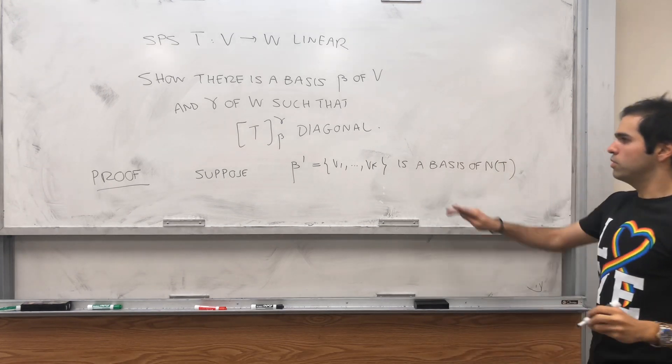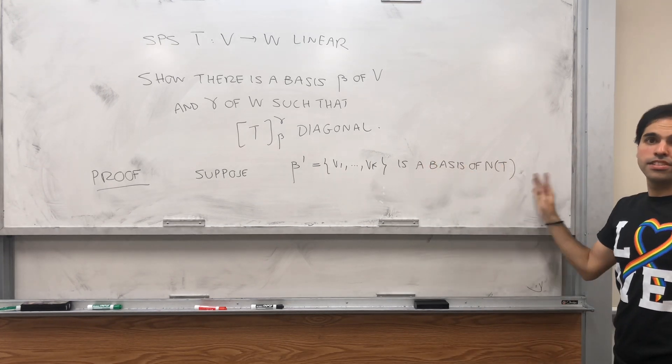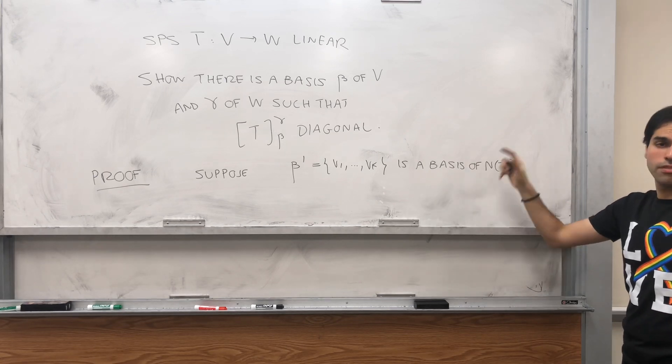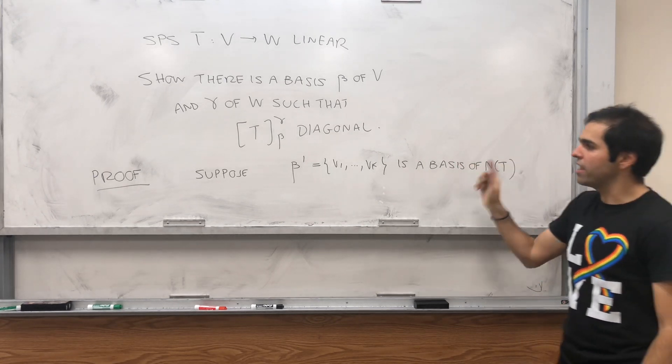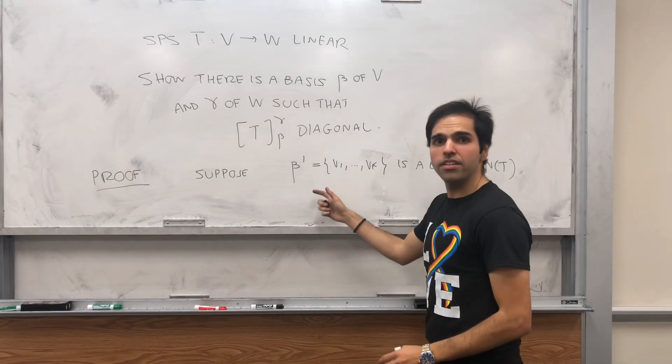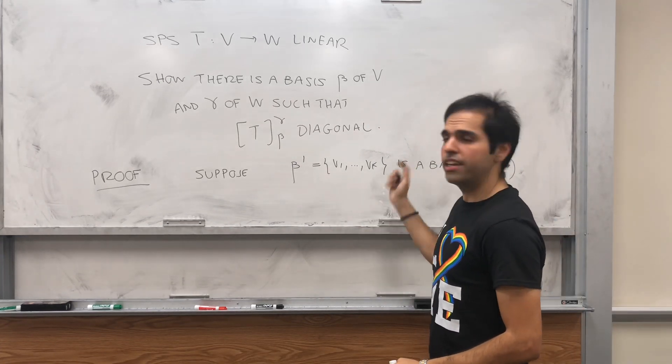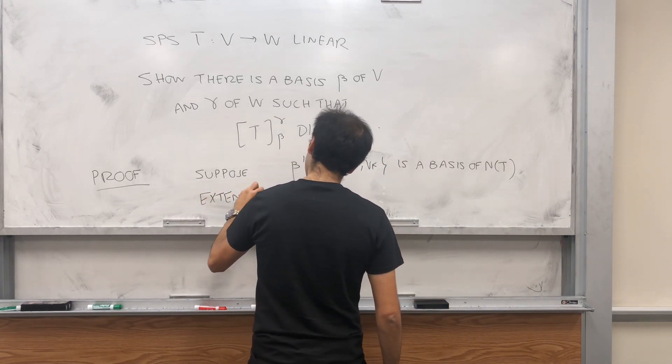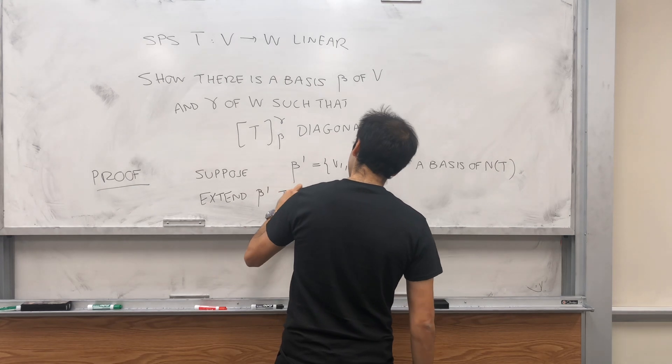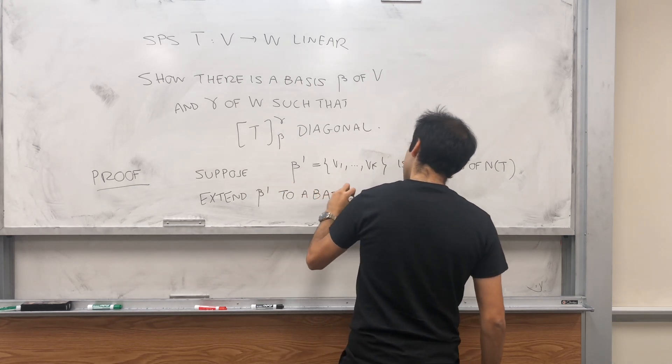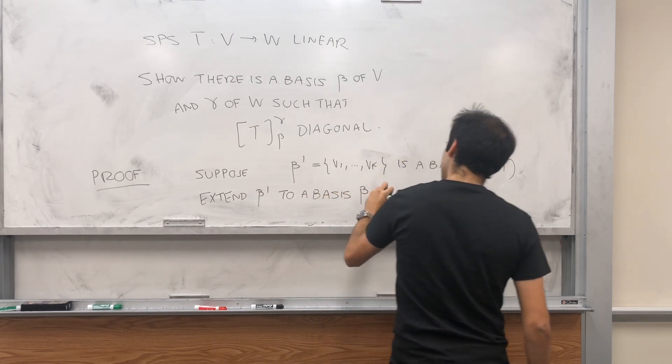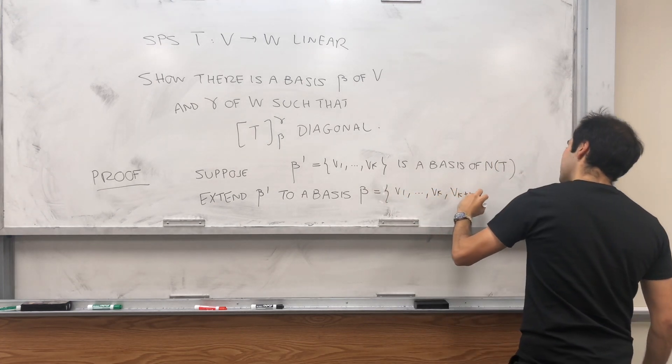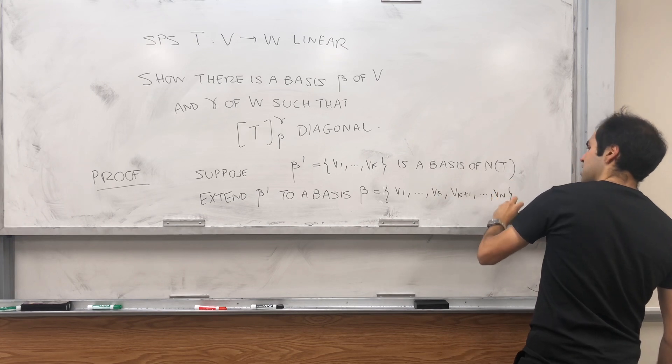And again, it's possible that k is zero. So it's possible that the null space is just a zero space and therefore beta prime is empty. Doesn't matter because even though we have that, we can extend it. So extend beta prime to a basis beta, which is v1 up to vk, vk plus 1 up to vn of V.